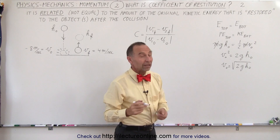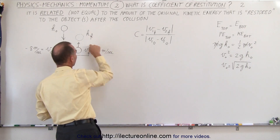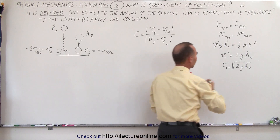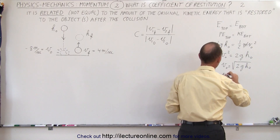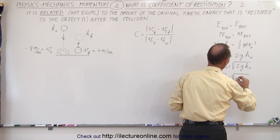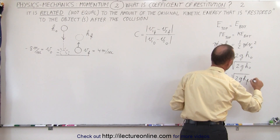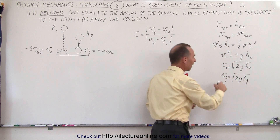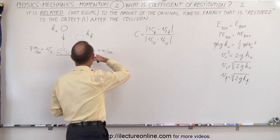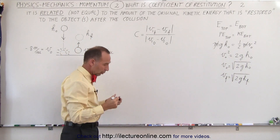Similarly, the height h final reached after the bounce depends on v final, the velocity after the collision. We can say that v final is equal to the square root of 2gh final. So the faster the velocity of the ball after it collides with the floor, the higher the ball will go.